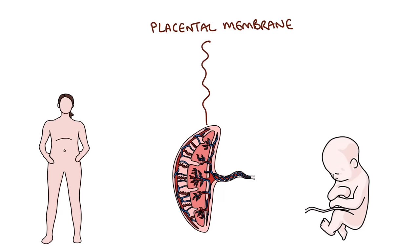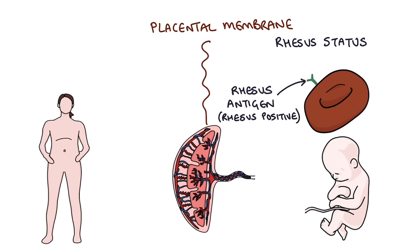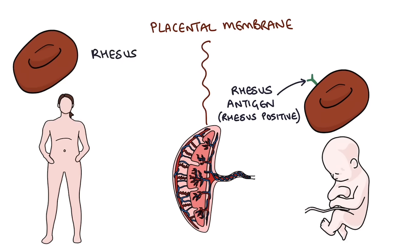When somebody talks about their blood group they might say they're A positive, B positive, or O negative. The first letter is their blood type and the second character — the positive or negative — is their rhesus status. If somebody's rhesus positive it means their red blood cells have the rhesus antigen on them. If somebody's rhesus negative, like O negative, it means their red blood cells don't have that rhesus antigen on them.